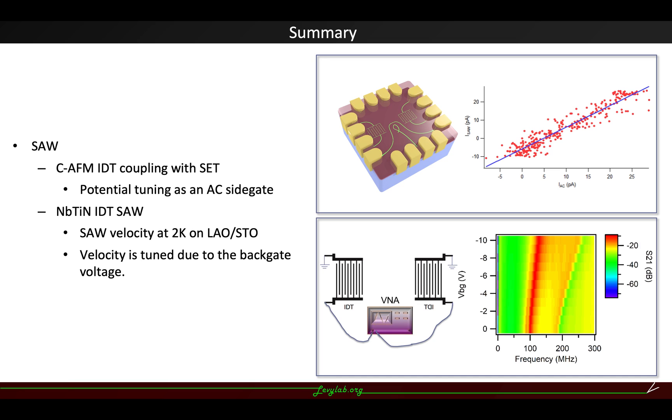Here is a summary. I introduced surface acoustic wave and we use conductive AFM lithography to pattern IDT structures and couple with a single electron transistor. And also we use NbTiN pattern IDT structures to measure the surface acoustic wave velocity at 2 Kelvin on LAO/STO. And here the velocity is tuned due to the backgate voltage.